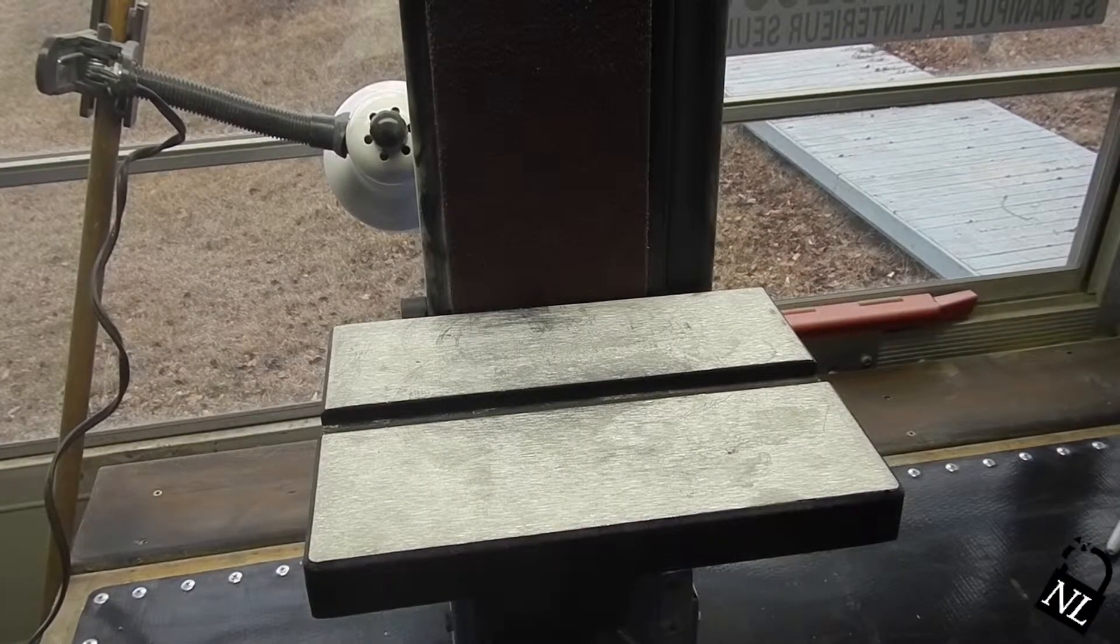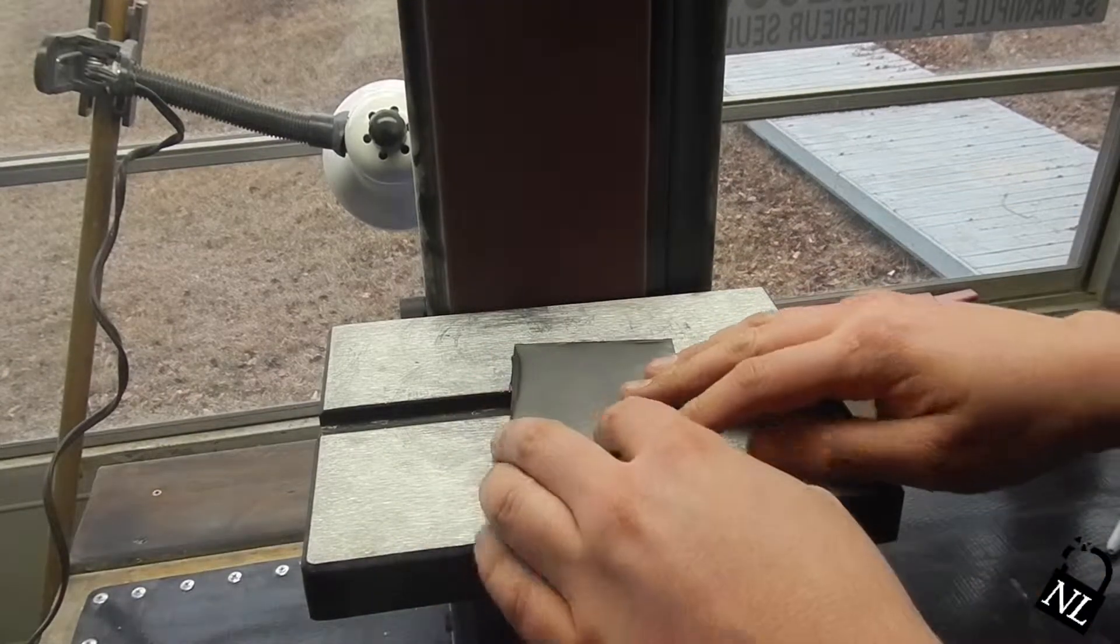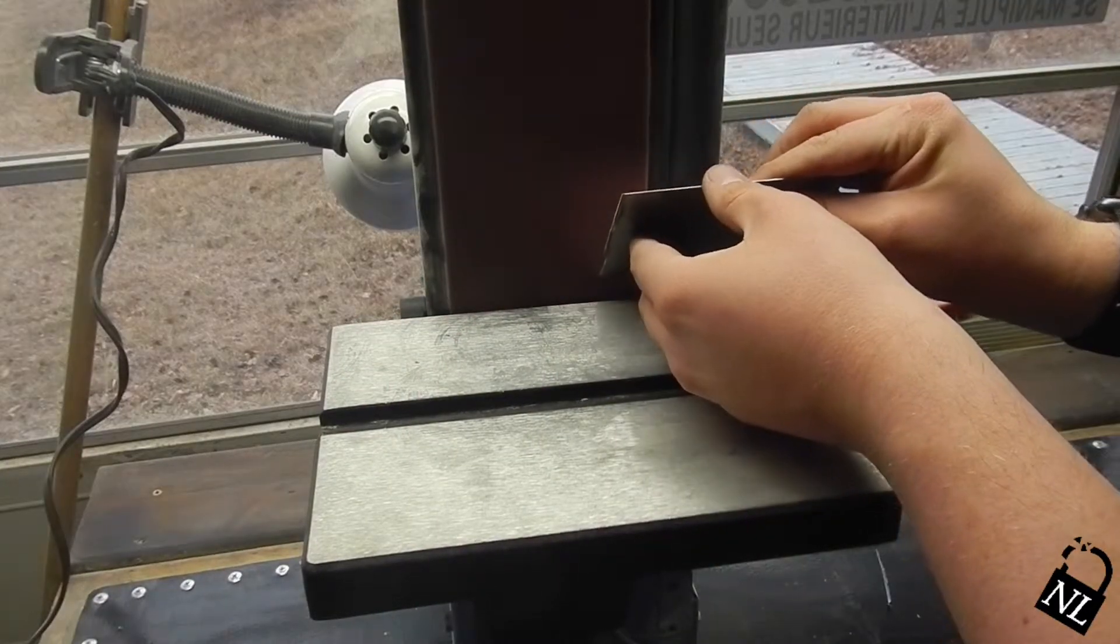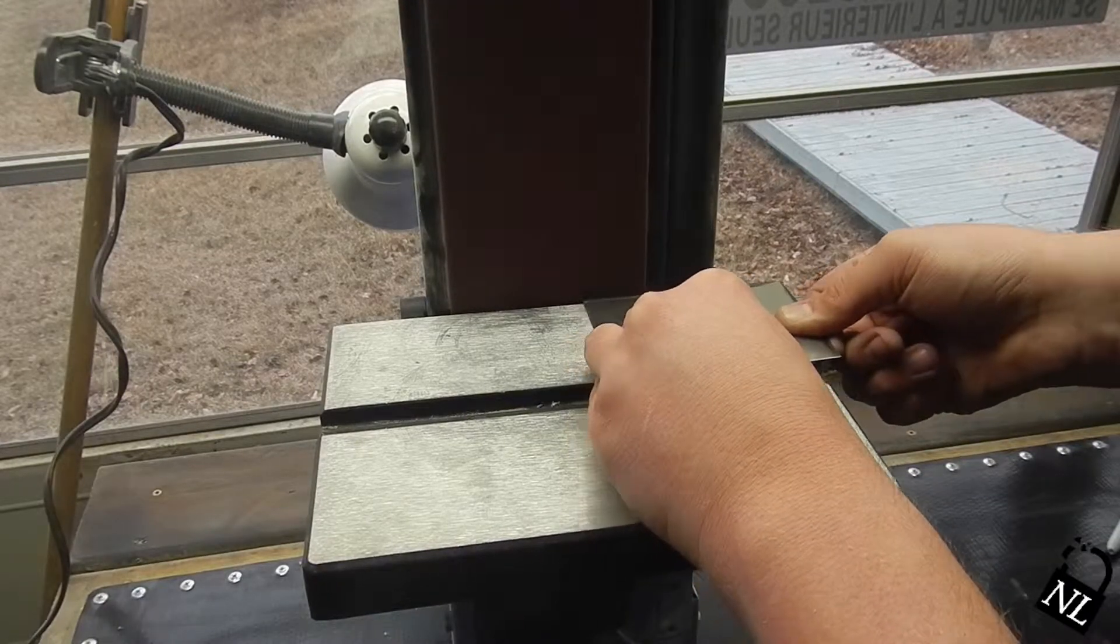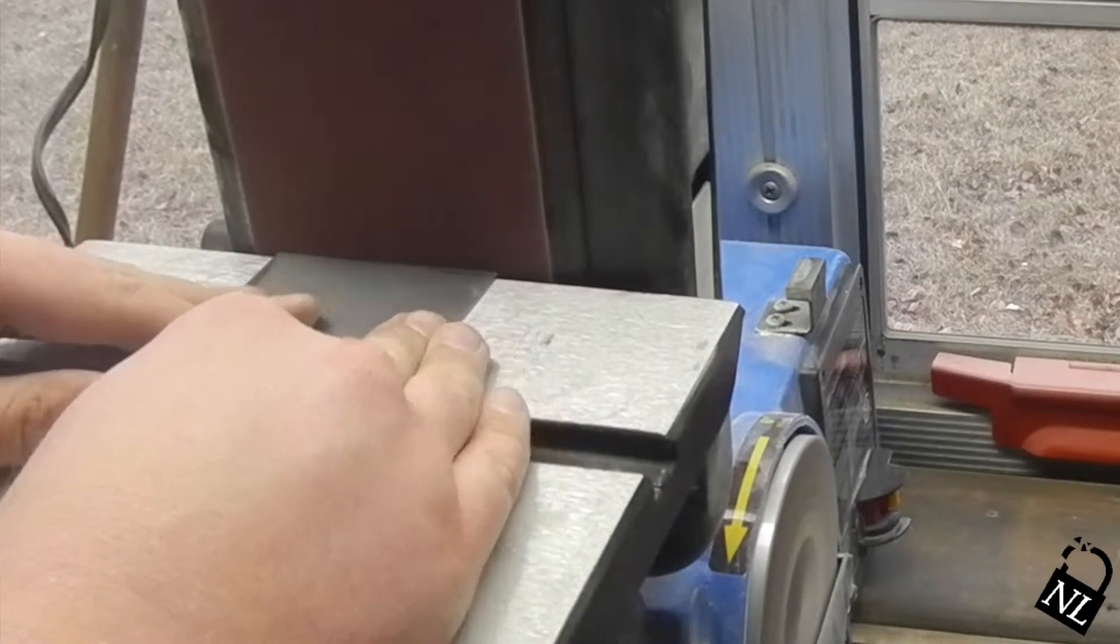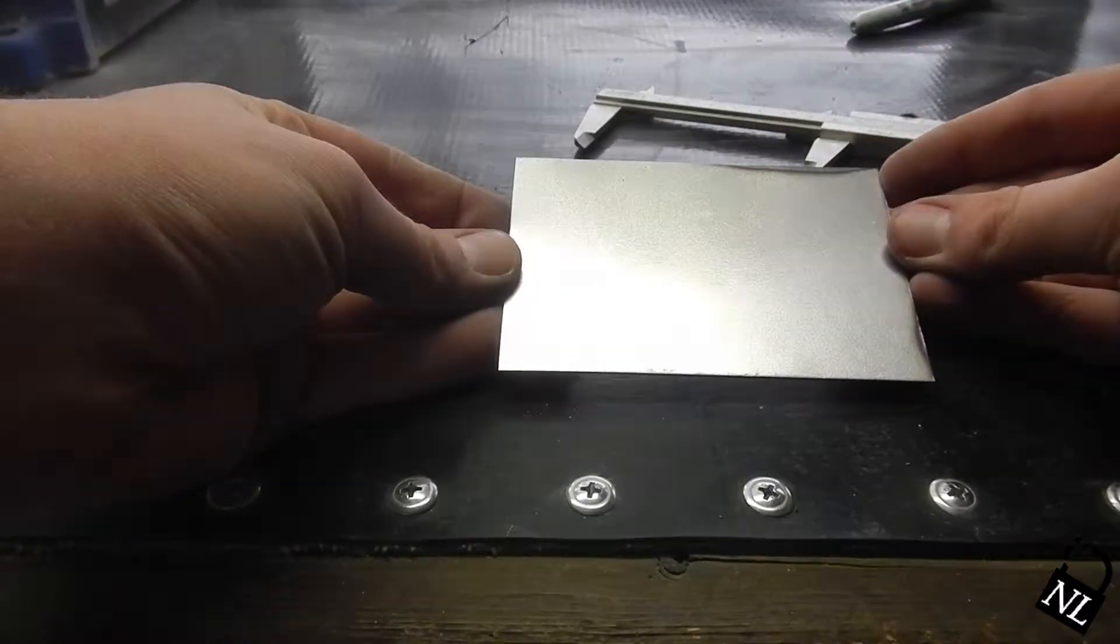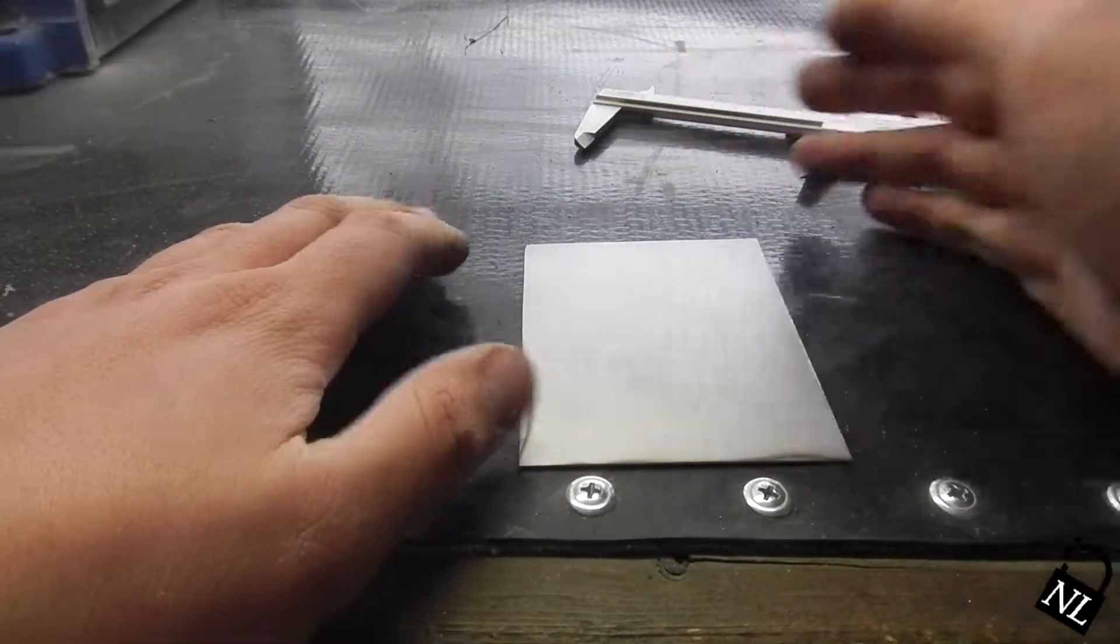Next, bring it over to the belt sander and sand down to the lines that I marked. So here's our A7 piece of steel. The next step is I'm going to cut off the first fold where you fold the corners in.